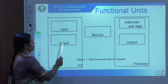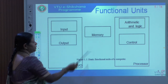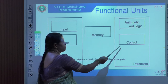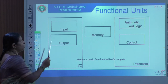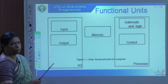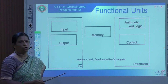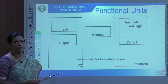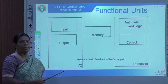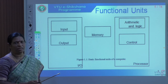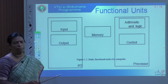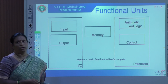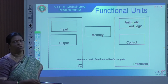The functional units of a computer are: the input unit, the output unit, memory, and the processor. Within the processor, we have the Arithmetic and Logic Unit (ALU) and the Control Unit. The input unit accepts input from the user via electromechanical devices such as keyboards, pointing devices like a mouse, and other input devices, and stores information in memory for later use.